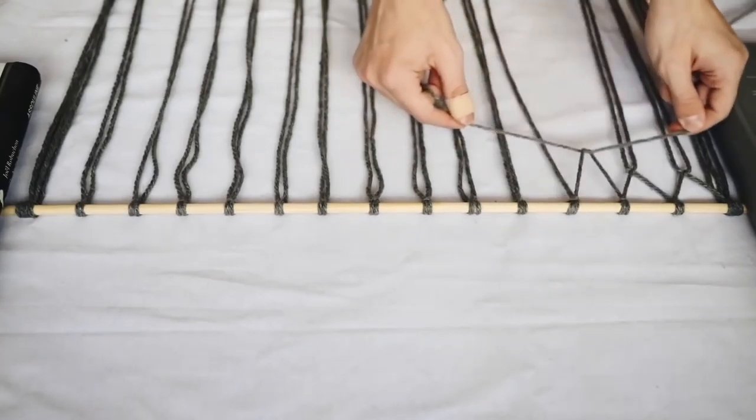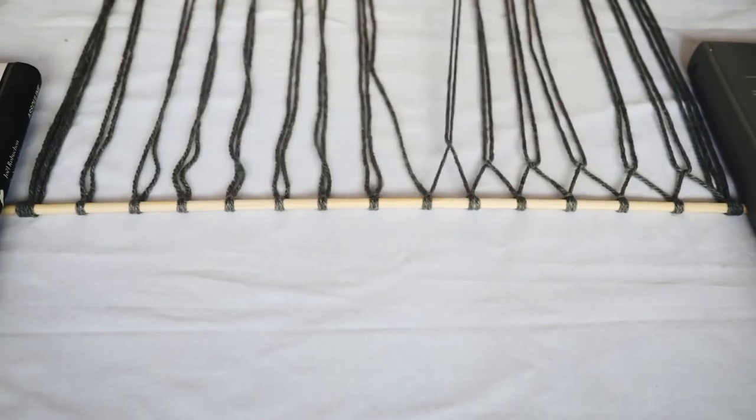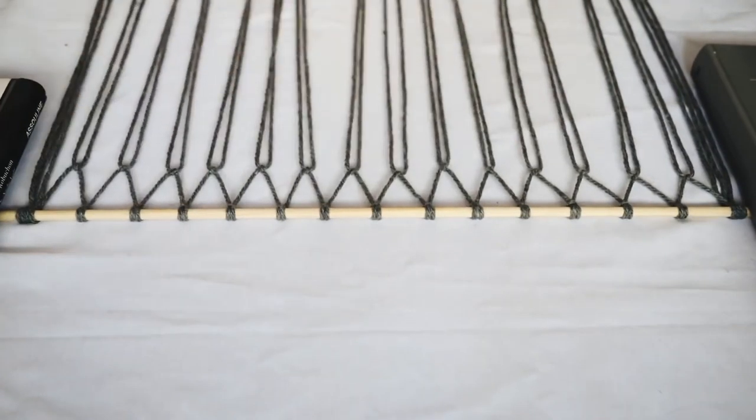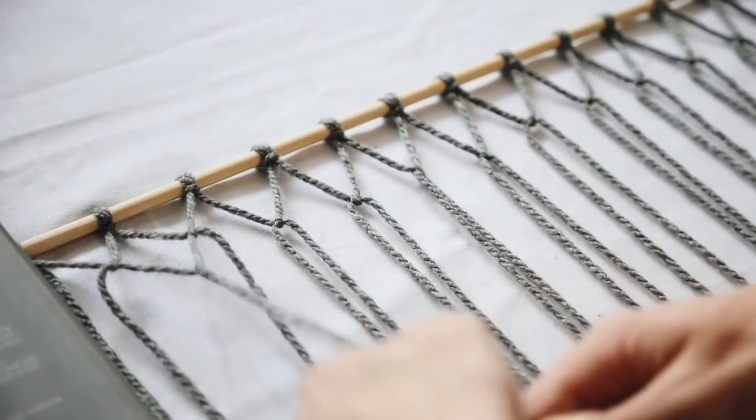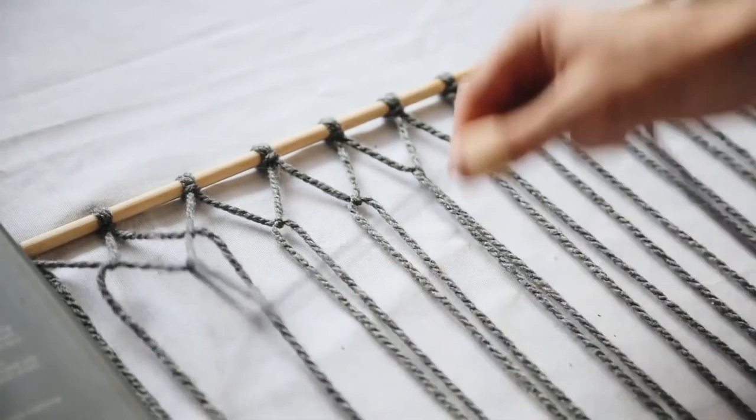Moving on from there, you're going to be creating square knots. This project only requires square knots, so it is very simple. A square knot is left over right and then right over left.